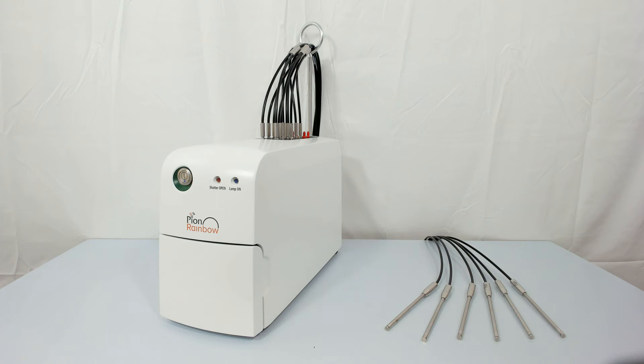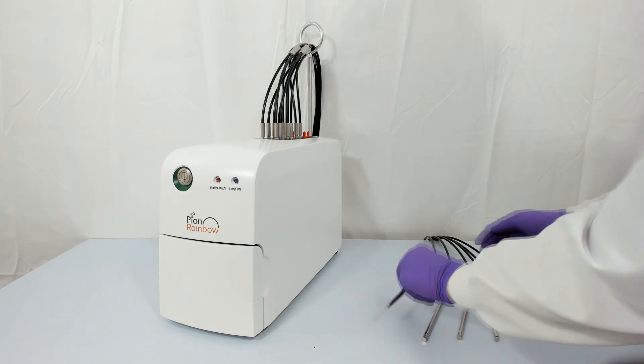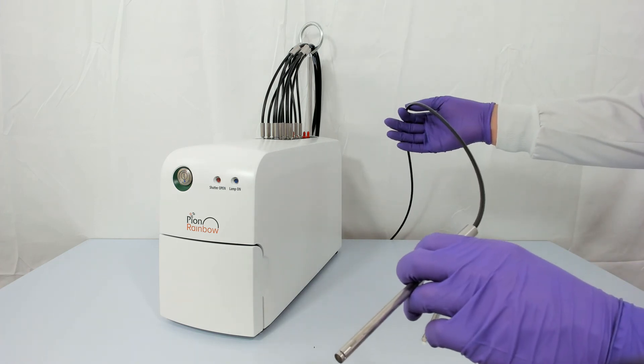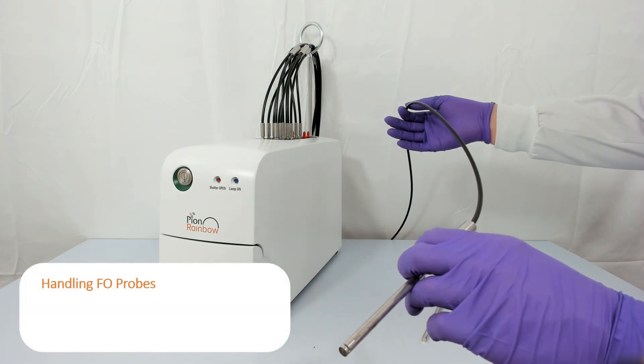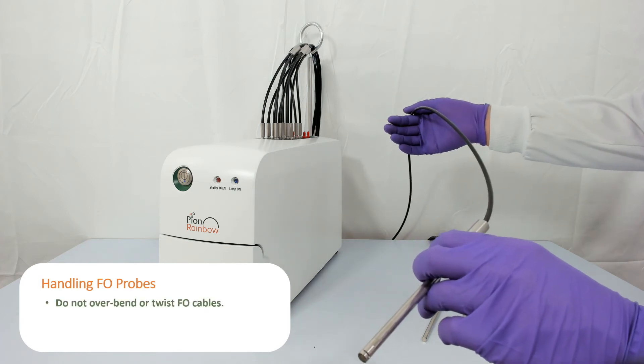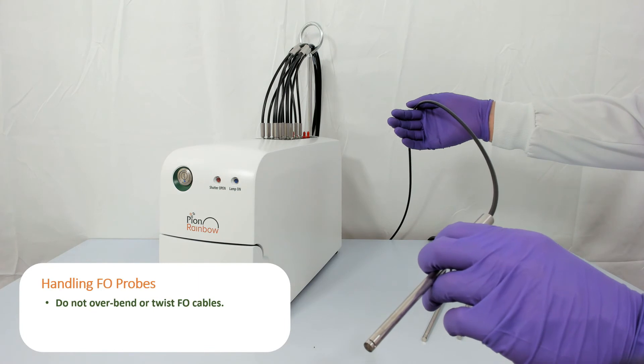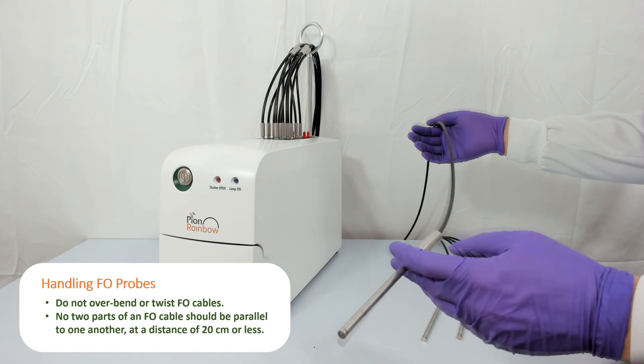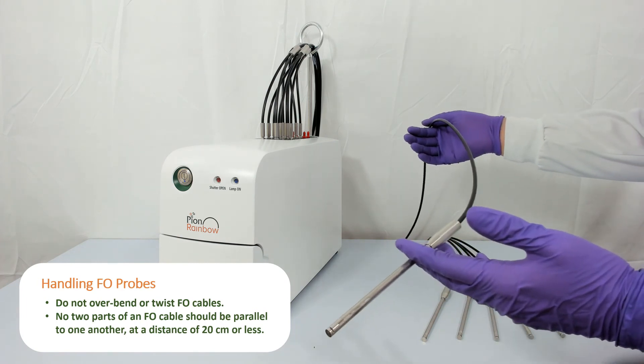Now, some important notes on care for the fiber optic probes. The cables themselves are reasonably durable, but possess a minimum bend radius of 20 cm, meaning that no two parts of the cable should ever be parallel to one another at a distance of 20 cm or less. Bends greater than this risk damaging the fiber optics.